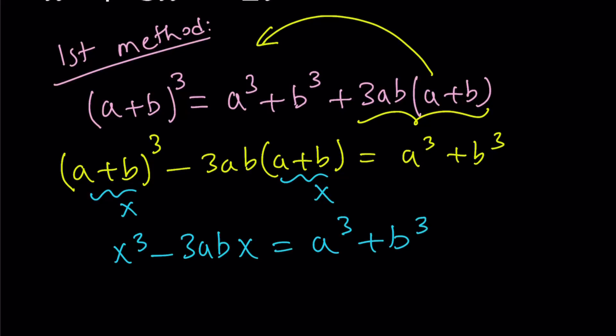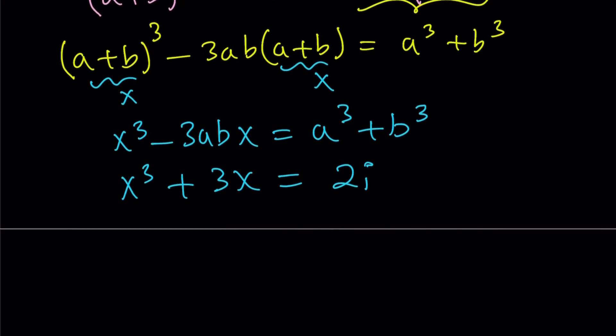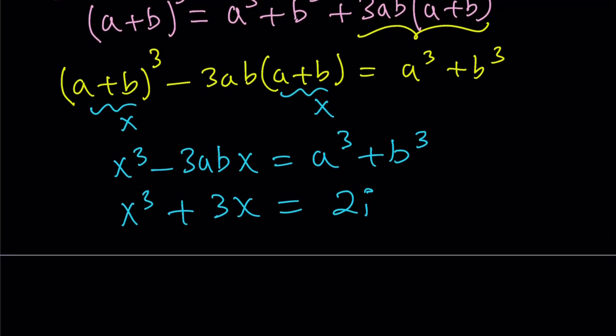So if you do that, you're going to get x cubed minus 3abx equals a cubed plus b cubed. Now if you compare this to our equation x cubed plus 3x equals 2i, you'll see a lot of similarities. For example, x cubed, they both have x cubed, they both have x, the coefficients of x are different, and they both have something constant on the right hand side because we're treating x as a variable and everything else is a constant, including i. i is a constant, even though it's a letter, it is a constant, the imaginary unit.